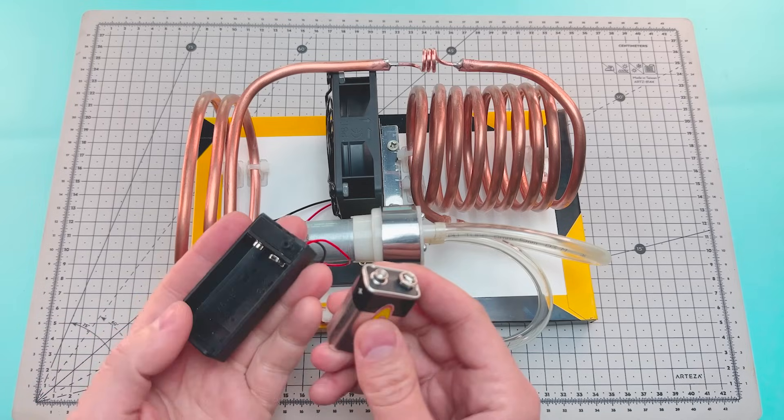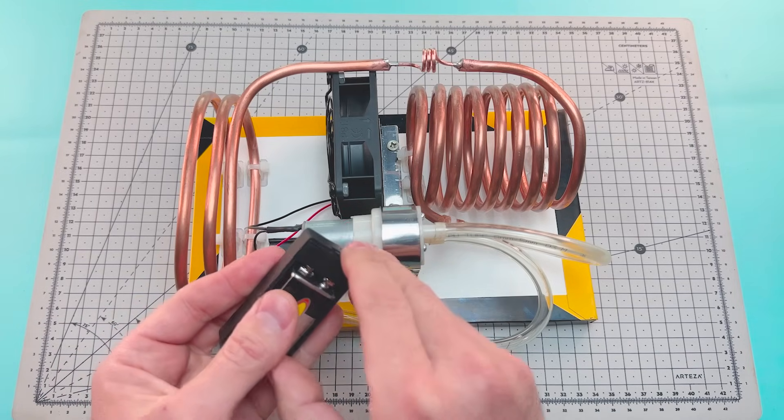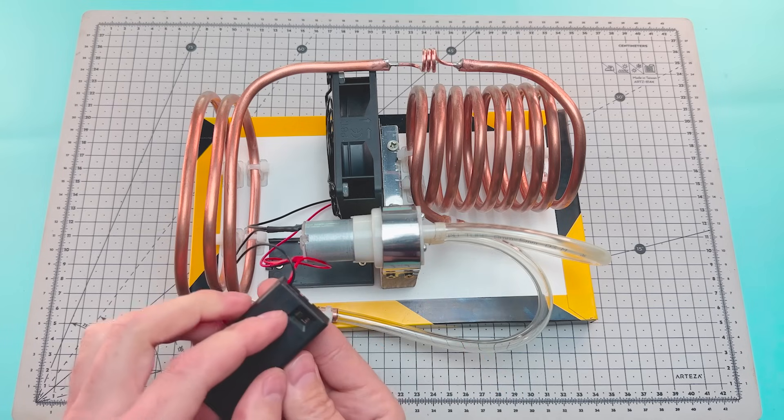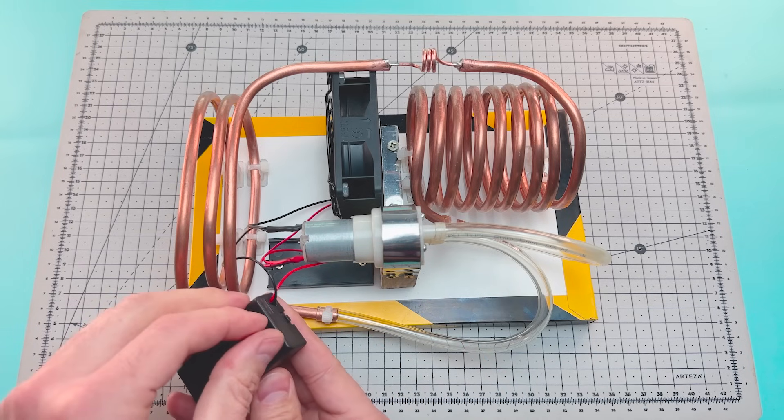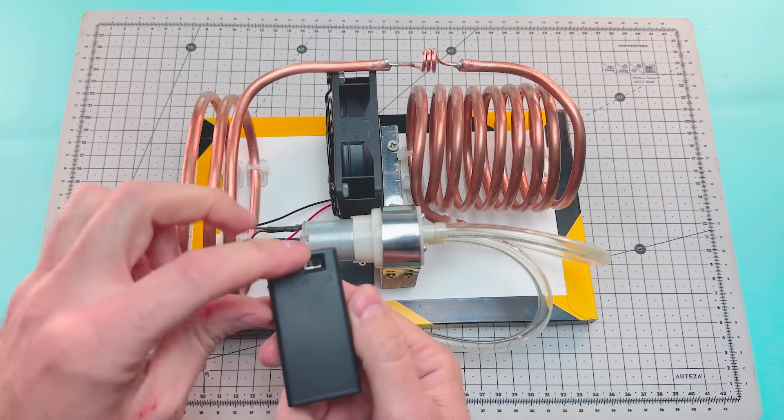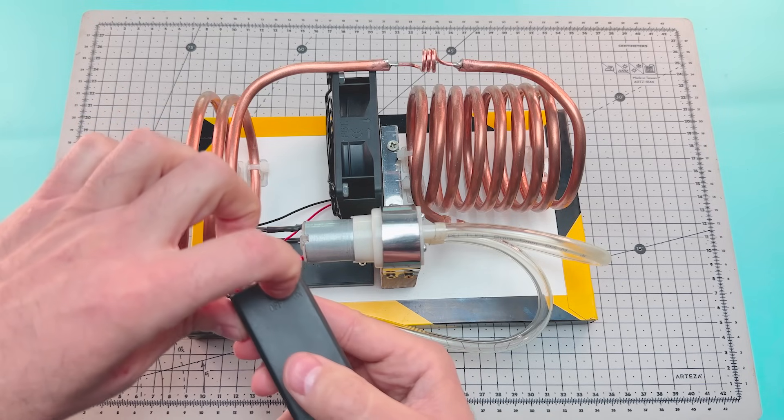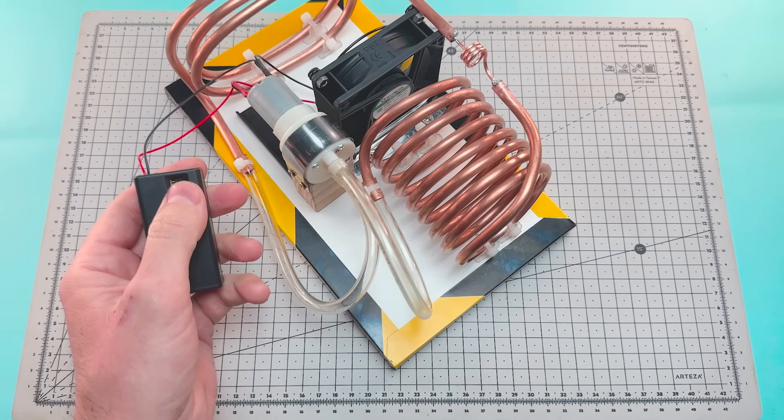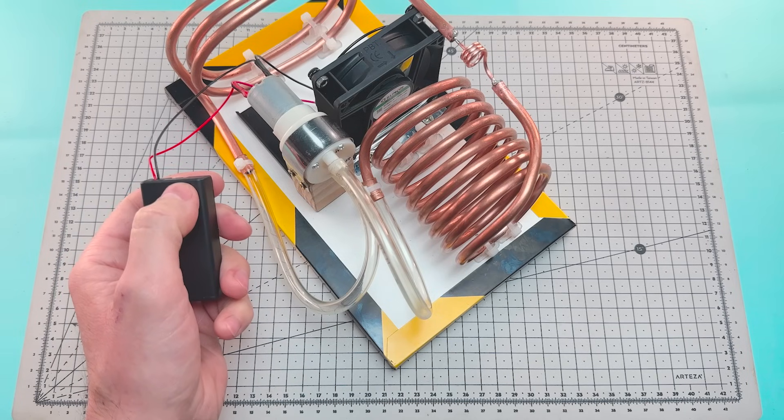With this small 9-volt battery, it will be enough to start up our portable air conditioner, and we'll be able to cool off during the hot summer nights. We check if it works, and yes, the pump activates when we turn on the battery.